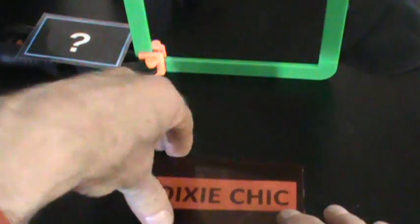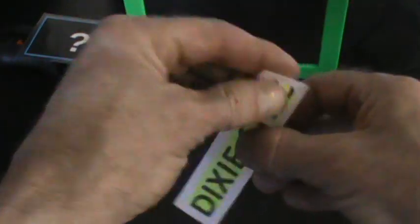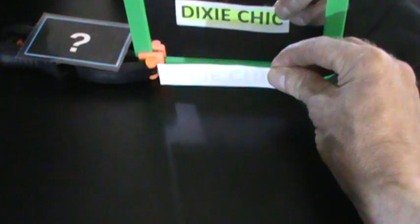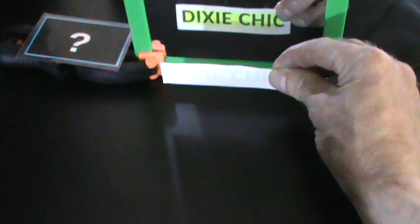But again, we can take off that red filter, turn the word upside down, show it in the mirror. Without the filter, it appears Dixie Chick can be read, even though it's upside down. Cool, huh? We're not done.